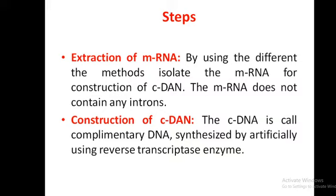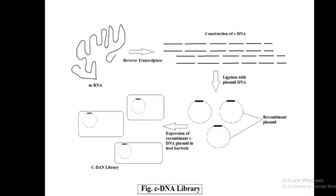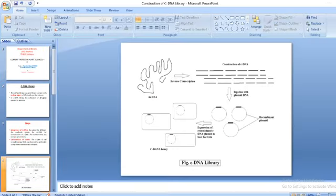Once we have the mRNA, the next step is converting the mRNA into cDNA. cDNA is called complementary DNA, synthesized artificially using reverse transcriptase enzymes — that is, RNA-dependent DNA polymerases. In most cases, retroviruses contain such kinds of enzymes. Here we have a diagrammatic representation of the cDNA library construction.